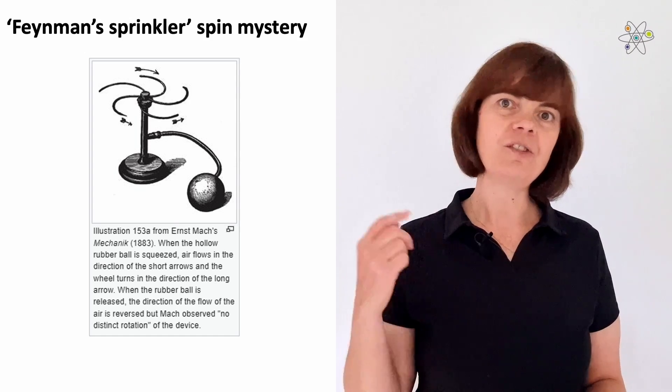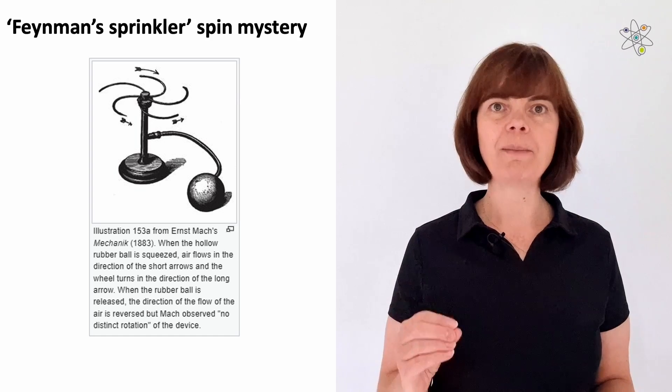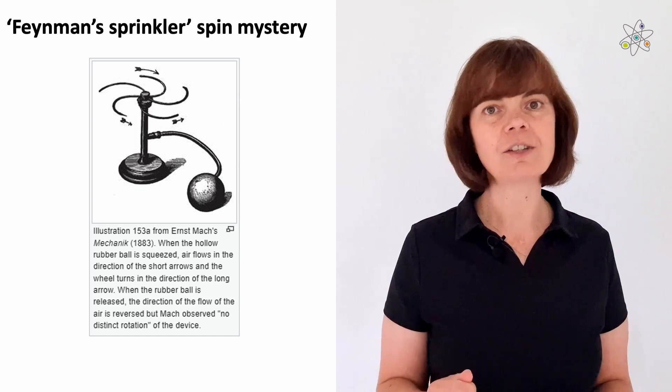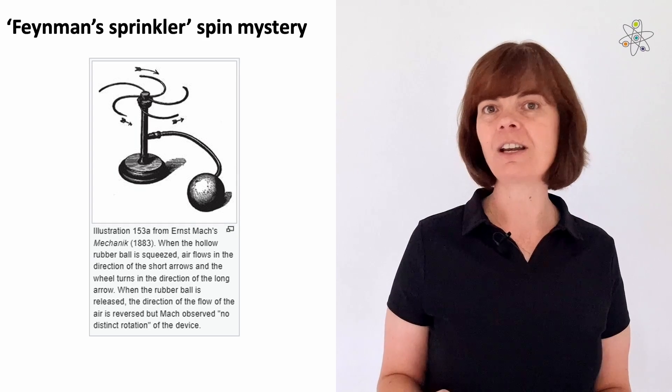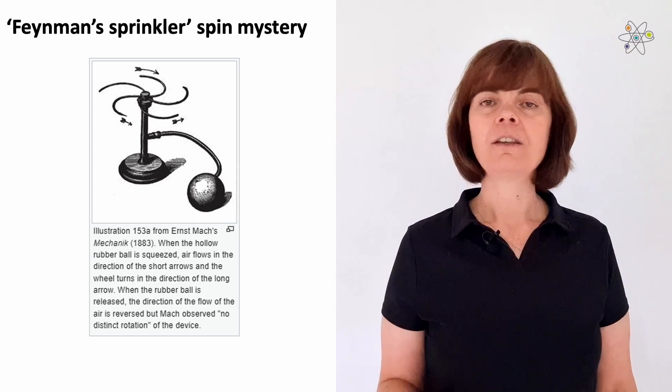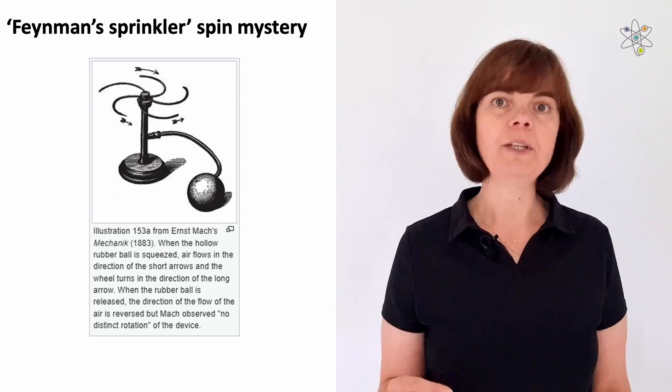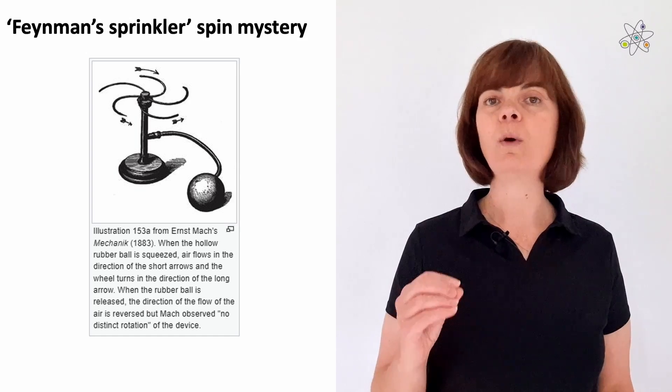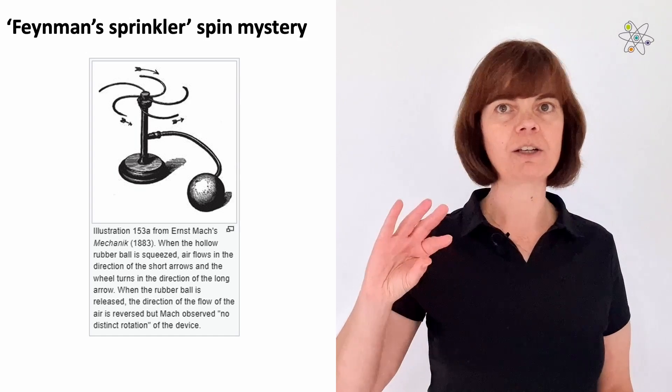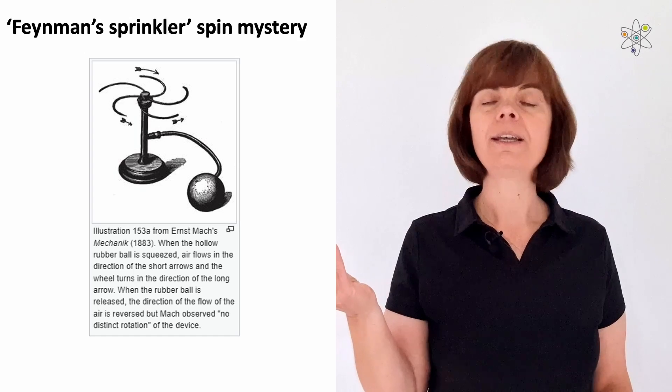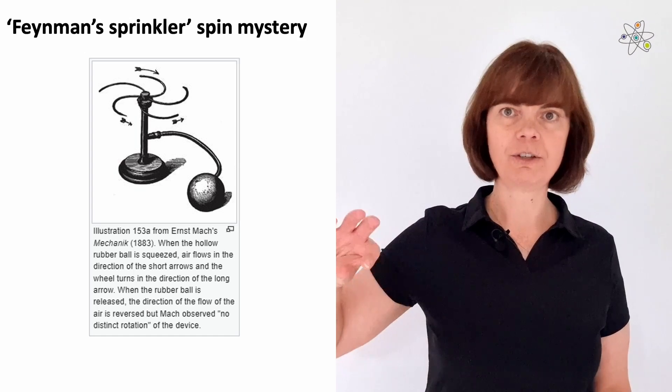In the 1940s, this problem began to circulate among members of the physics department at Princeton University in the USA, and it generated a lively debate. Richard Feynman, who was at the time a young graduate student, gave one theoretical argument for why the sprinkler should rotate in the forward direction, and another one for why it should rotate in reverse.